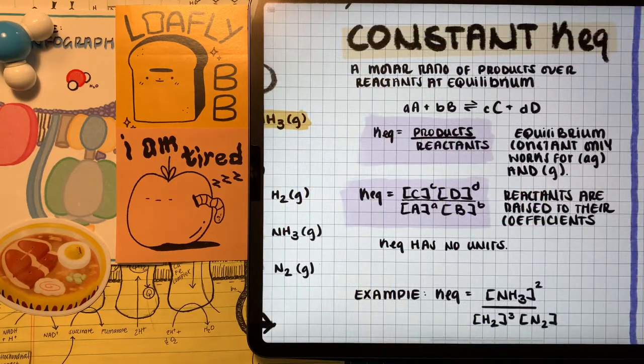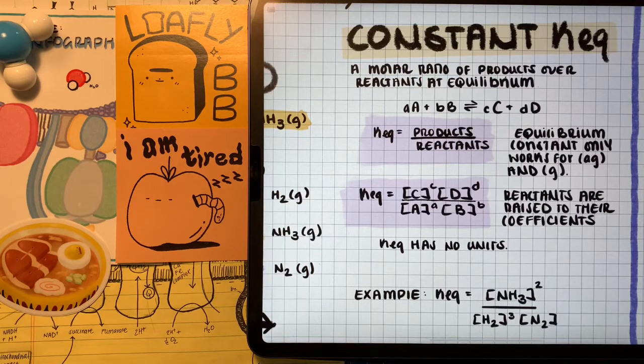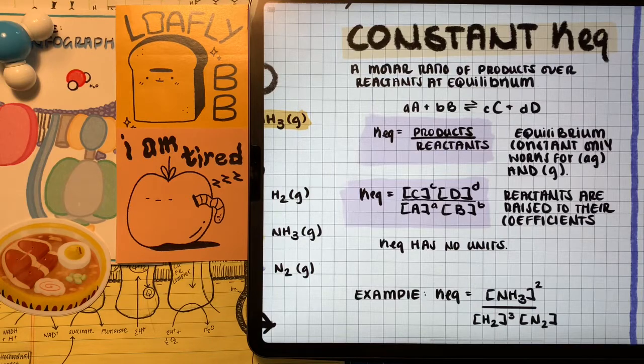To have a reaction at equilibrium, we want to find the rate constant or the equilibrium constant. We find this by having products over reactants, and the products and reactants raised to their coefficients. So you can see here in this generalized example how we have the lowercase letters as the coefficients, and the capitalized letters as the products and reactants. One really important note to remember is that the equilibrium constant only works for things in the gaseous and aqueous states, and that the equilibrium constant has absolutely no units.